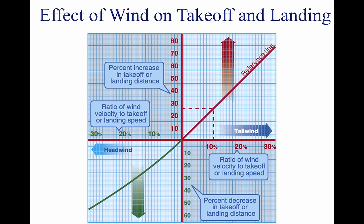The effect of pressure altitude and ambient temperature is to define the density altitude and its effect on takeoff performance. An increase in density altitude can produce a two-fold effect on takeoff performance: greater takeoff speed and decreased thrust and reduced net accelerating force. Proper accounting of pressure altitude and temperature is mandatory for accurate prediction of takeoff roll distance. The most critical conditions of takeoff performance are the result of some combination of high gross weight, altitude, temperature, and unfavorable wind.